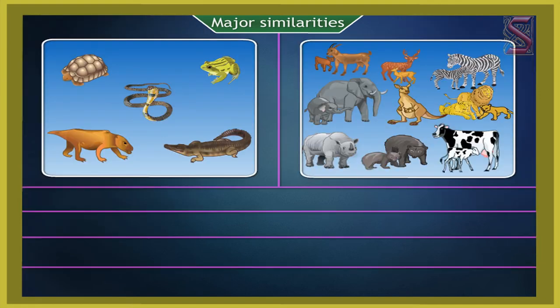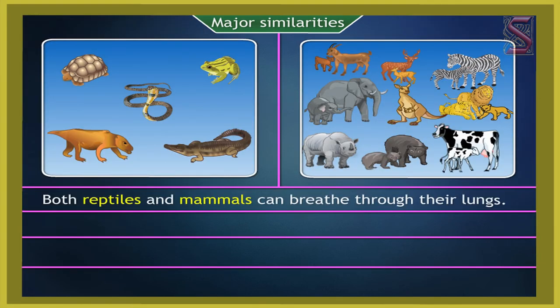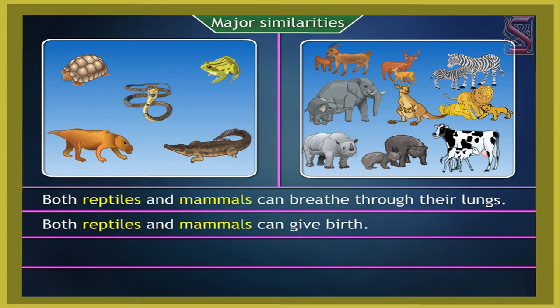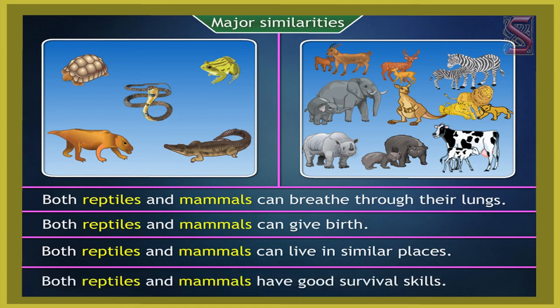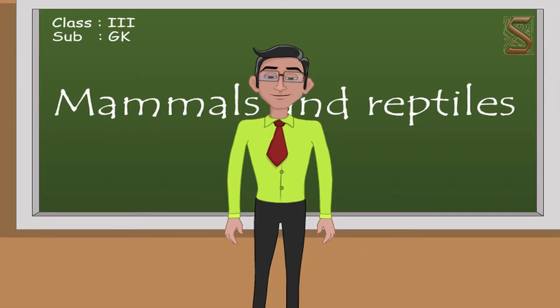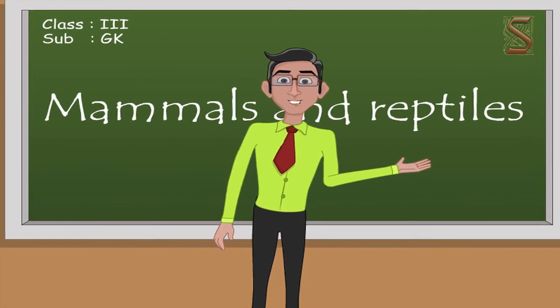Major similarities: both reptiles and mammals can breathe through their lungs. Both can give birth. Both can live in similar places. Both reptiles and mammals have good survival skills. We have now reached the end of this session.